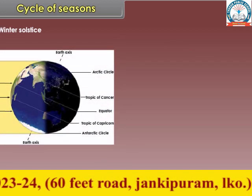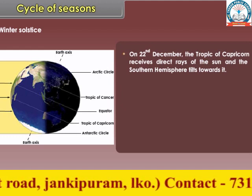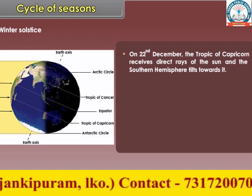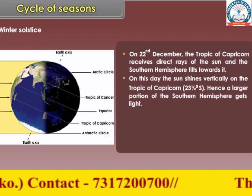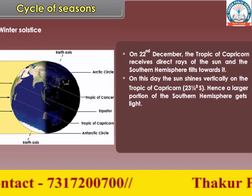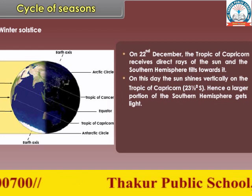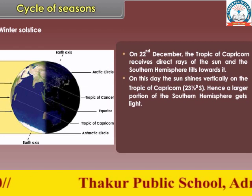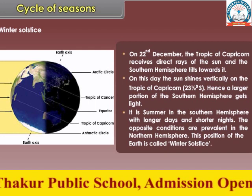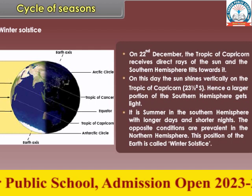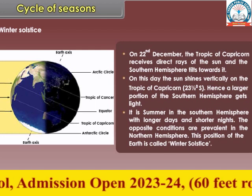Winter solstice: on 22nd December, the Tropic of Capricorn receives direct rays of the sun and the Southern Hemisphere tilts towards it. On this day, the sun shines vertically on the Tropic of Capricorn, 23 and a half degrees south. Hence, a larger portion of the Southern Hemisphere gets light. It is summer in the Southern Hemisphere with longer days and shorter nights. The opposite conditions are prevalent in the Northern Hemisphere. This position of the earth is called winter solstice.